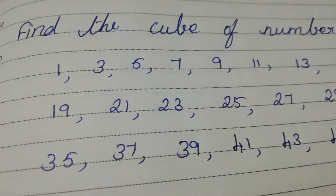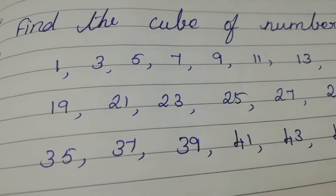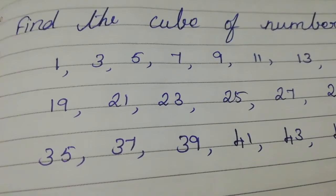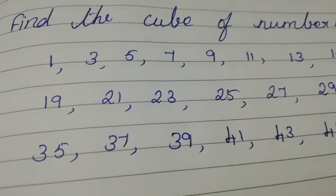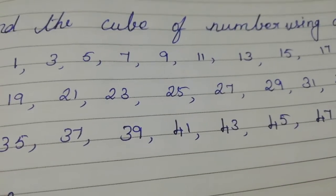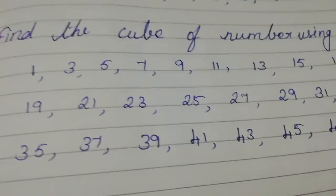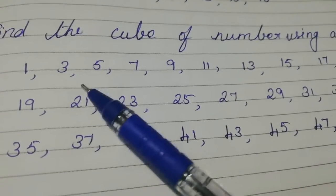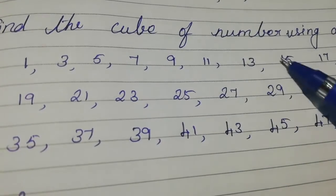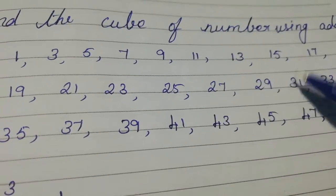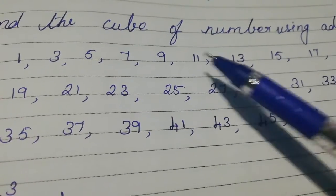Hello everyone, welcome to SDR Simple Max. In this video we are going to see how to find the cube of numbers using addition. Find the cube of numbers using addition. So here I have written odd numbers: 1, 3, 5, 7, 9, 11, etc. These are all odd numbers. Using these odd numbers we can find the cube of numbers.